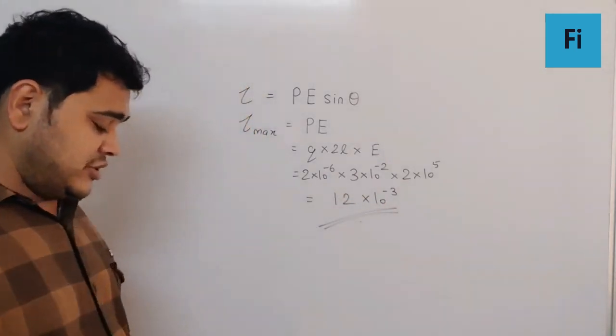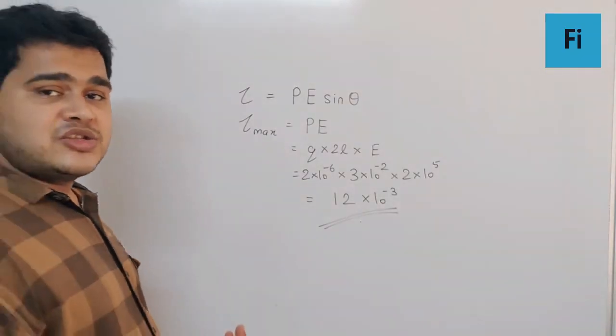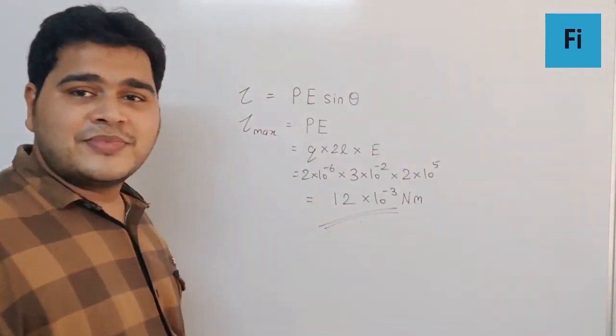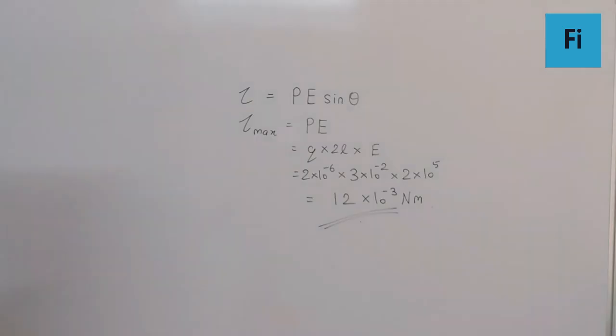So your final answer should be 12×10^-3 Newton meter. I hope you understood this, please copy.